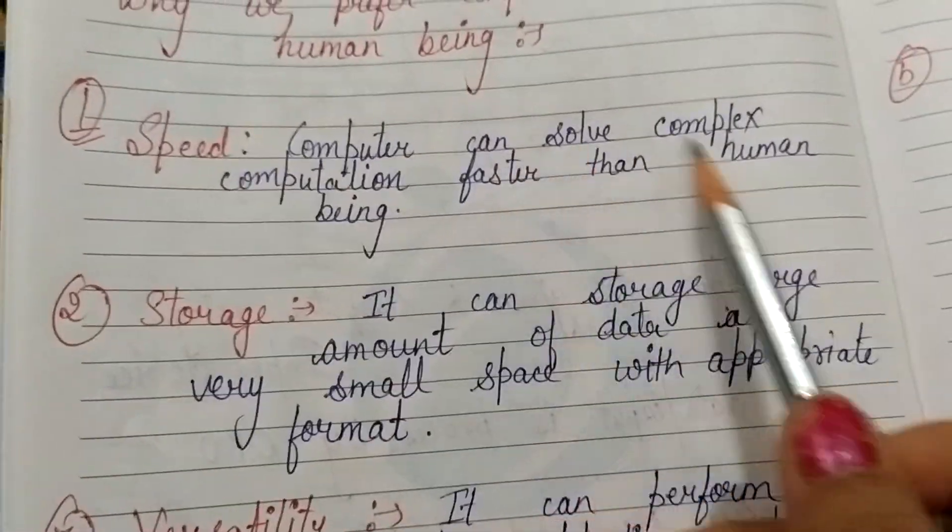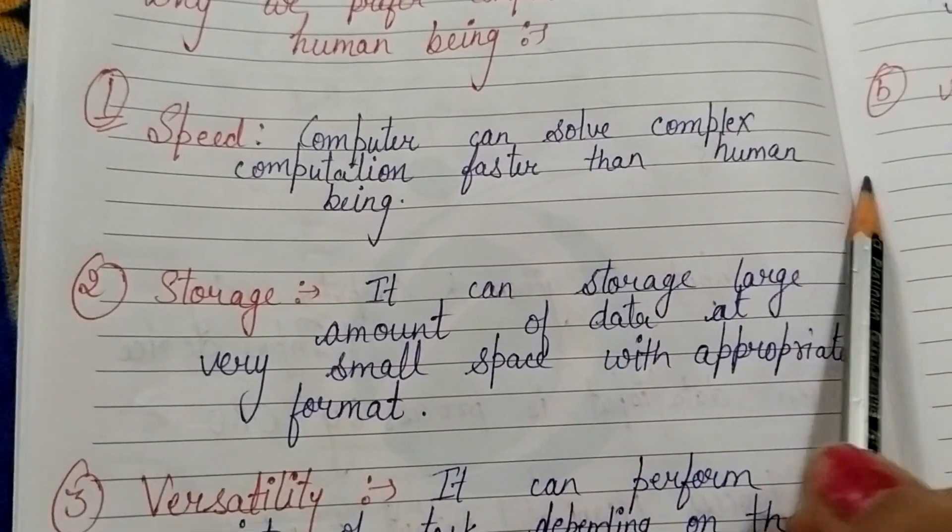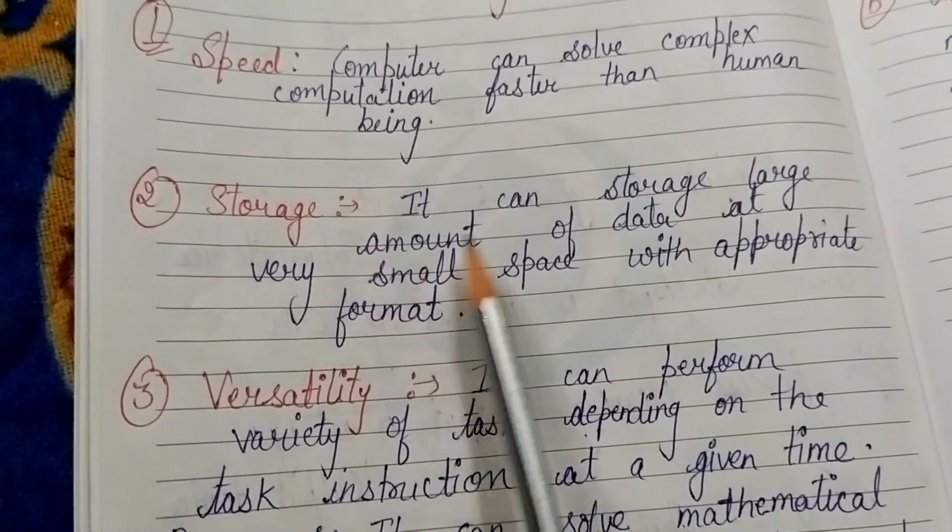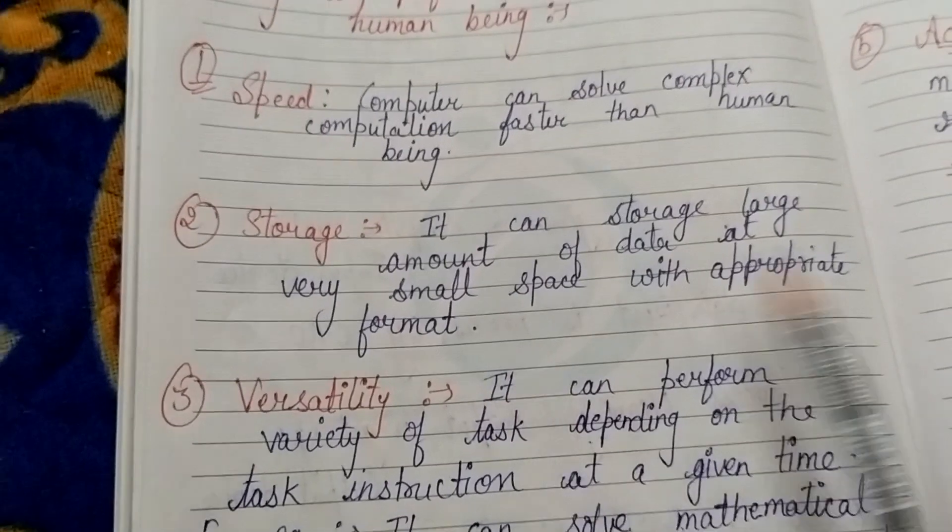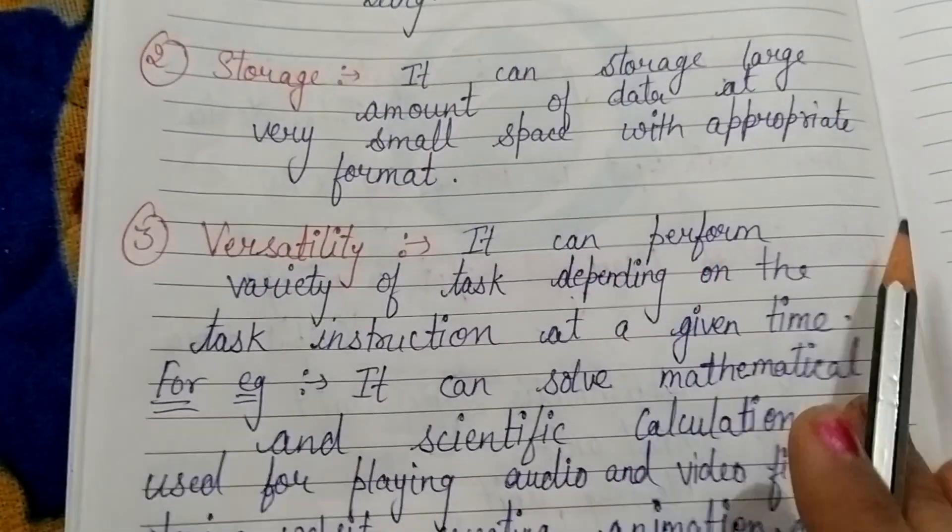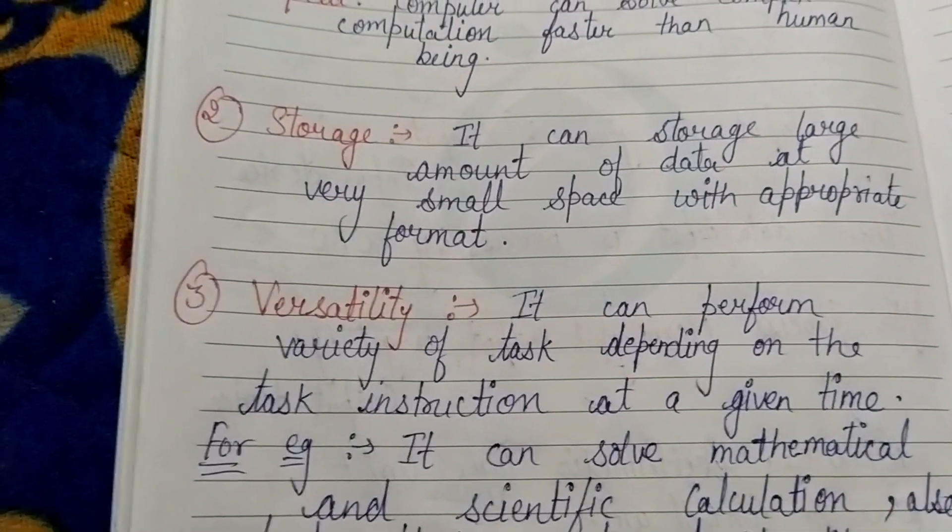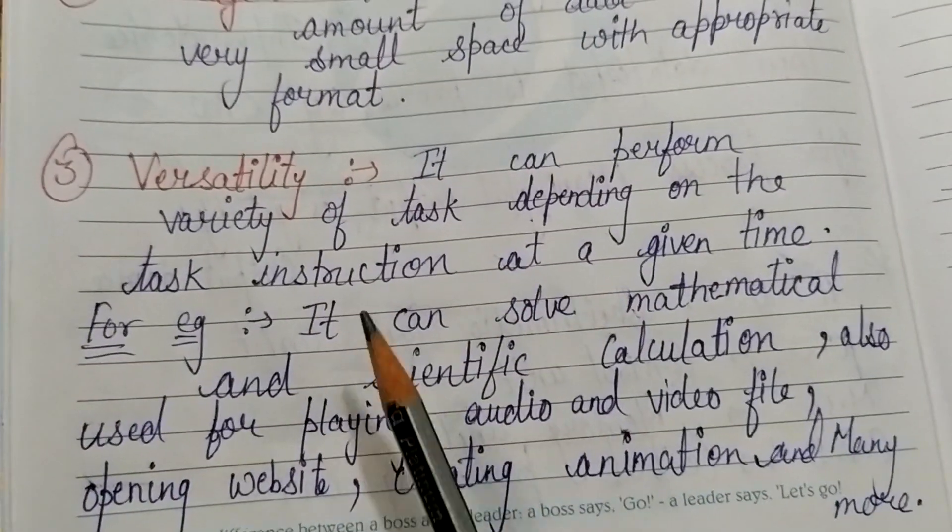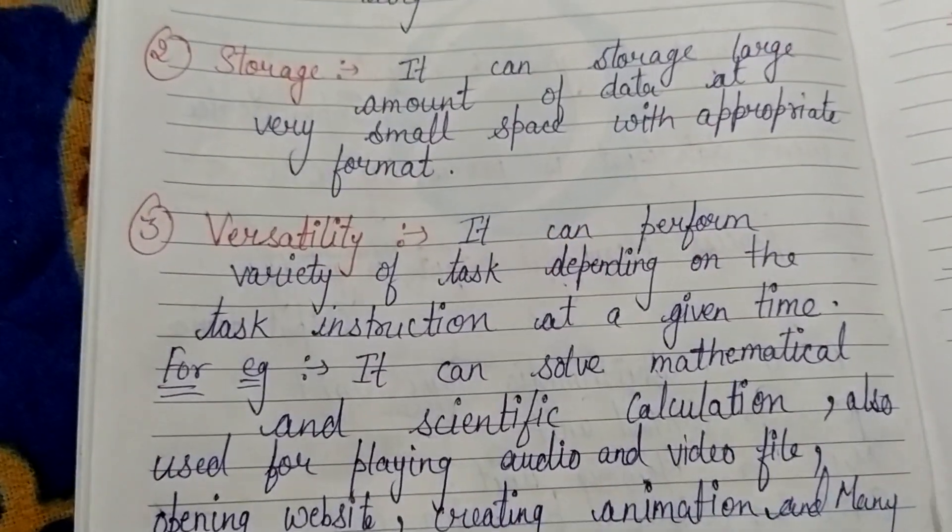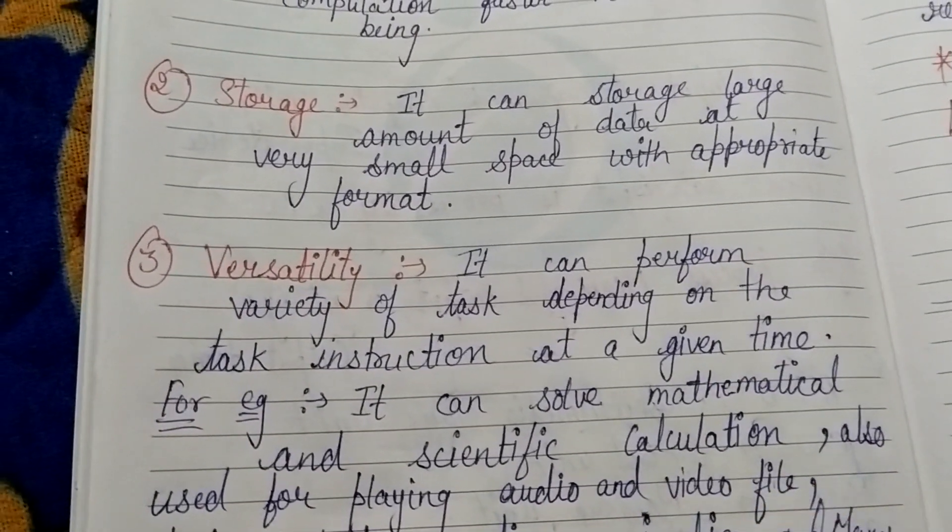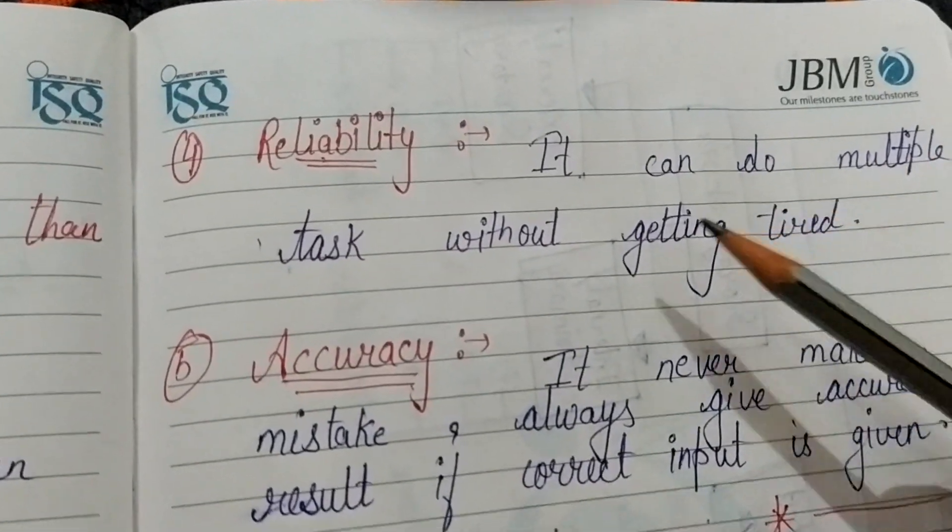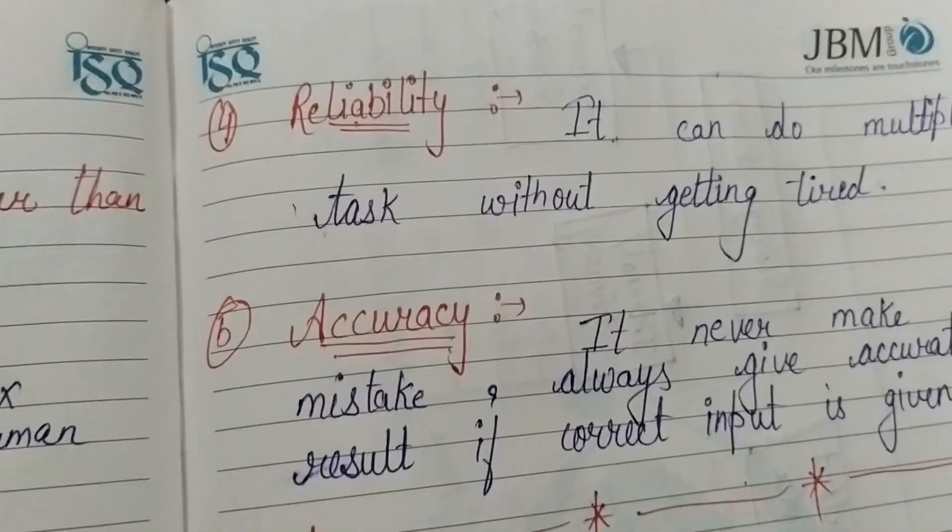The first point is speed: computer solves complex computations faster as compared to human beings. Then comes storage: we prefer it based on storage because computer stores large amounts of data in appropriate format. It has its own format in which it stores. Then versatility: what is versatility? Our computer does many tasks, that is multiple doer. We have given an example: it can solve mathematical and scientific calculations, used for playing audio and video files, opening websites, creating animation and many more. A human being cannot do all these tasks by himself, or we cannot perform all these functions within a human being, but we can perform all these functions with a computer. Then reliability: it does multiple tasks without getting tired.